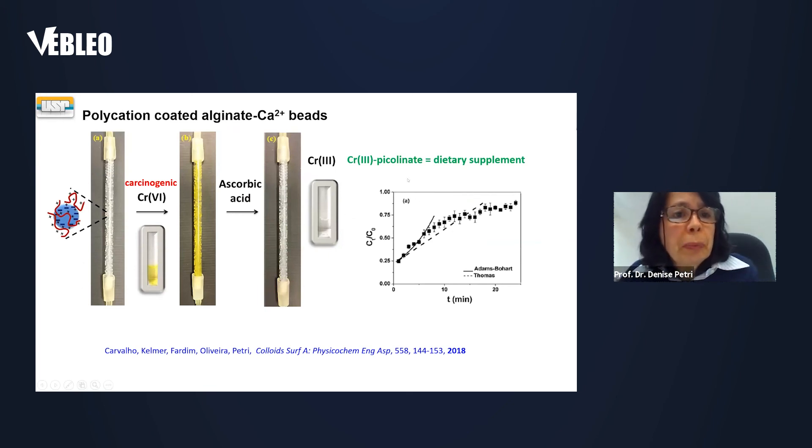We can also prepare beads of alginate and modify them with polycations and build it and add it to a column. And we can remove the chromium six, which is carcinogenic. And just rinsing with ascorbic acid, we promote the reduction of chromium six to chromium three, which is very good because chromium three builds a complex with picolinate, which is a dietary supplement. So it's a nice process.